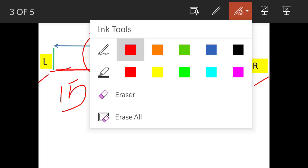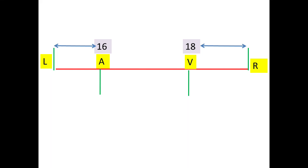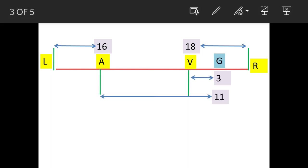Now we will see the position of G. G is 11th from A to the right side and 3rd from V to the right side.